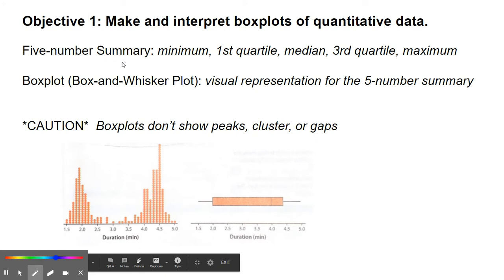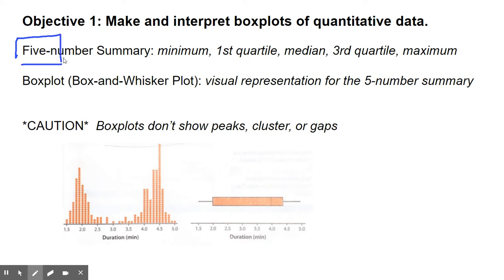When you make a box plot, you need what's called the five-number summary. Those five numbers are the minimum, first quartile, median, third quartile, and maximum. When we put this into the stats applet, you will get those five numbers in the summary statistics, so it'll calculate it for you. Once you get those, you can make the box plot or box and whisker plot, which is the visual representation of the five-number summary.